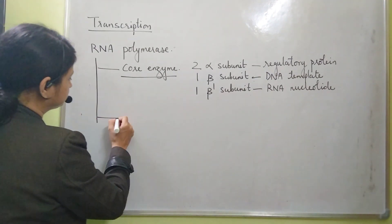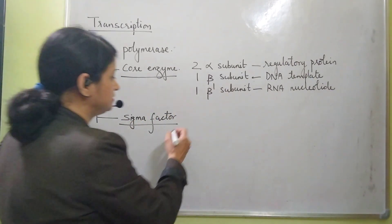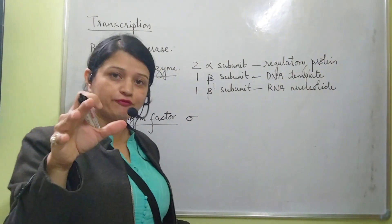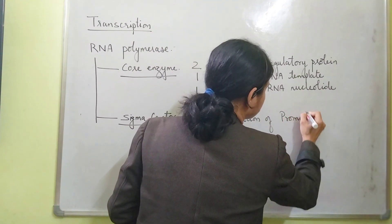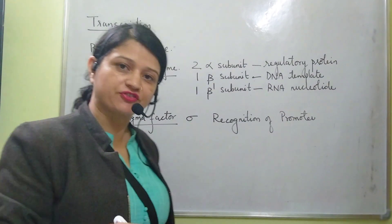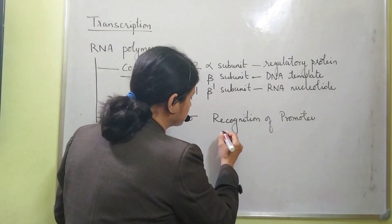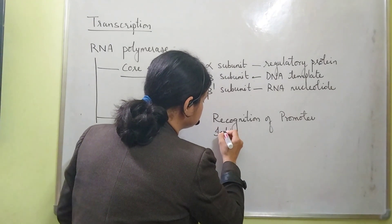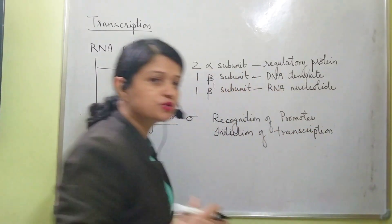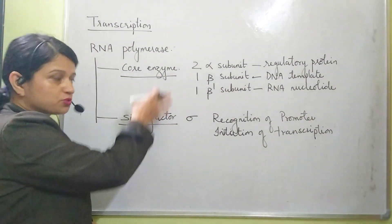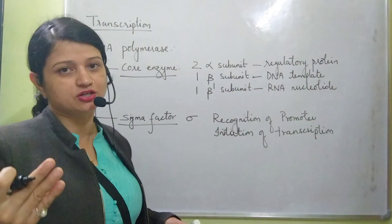The second part is the sigma factor. Sigma factor is required for the recognition of the promoter site — the region from where transcription will start. It is also required for the initiation of transcription. It binds to RNA polymerase only when transcription is to be started.